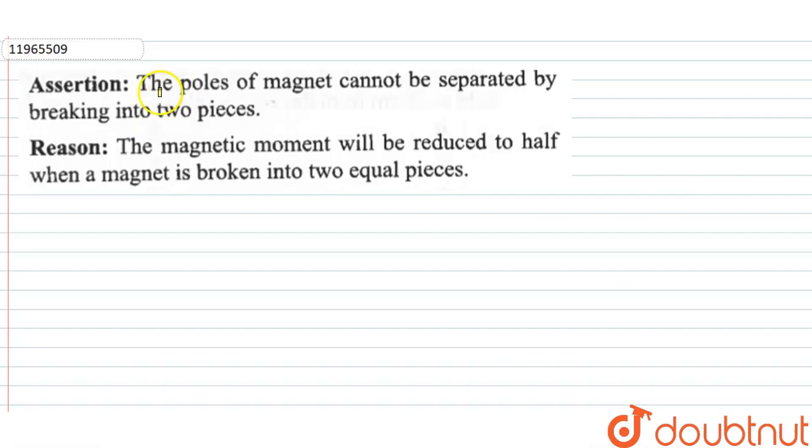So this question is given an assertion statement that the poles of a magnet cannot be separated by breaking into two pieces. And another reason statement is the magnetic moment will be reduced to half when a magnet is broken into two equal pieces.